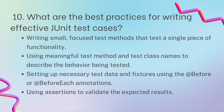What are the best practices for writing effective JUnit test cases? First, write small, focused test methods — every functionality should be covered separately. For example, if you are testing a Math class with functions like addition, subtraction, division, and multiplication, each function should have its own separate test case. Also use meaningful test case names that describe the behavior of the function being tested.